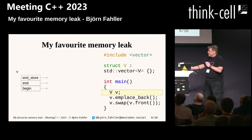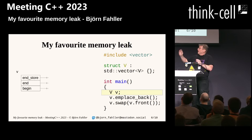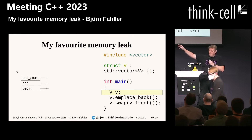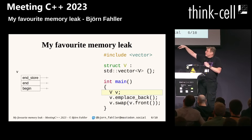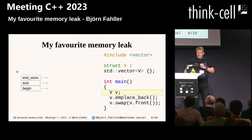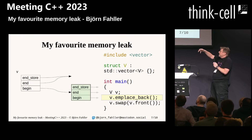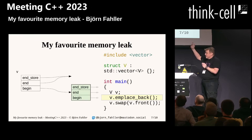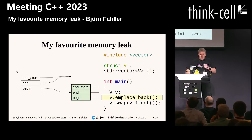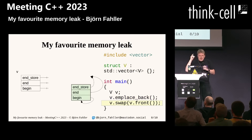Let's go through the memory leak. In main, we create V — this is the empty vector to the left. The pointers are null; they don't point to anything, so the vector is empty. Then we do emplace_back, creating one child to V, which in its turn has no children, so its pointers are null. And now we do swap. Remember what swap does — we just exchange the pointers.